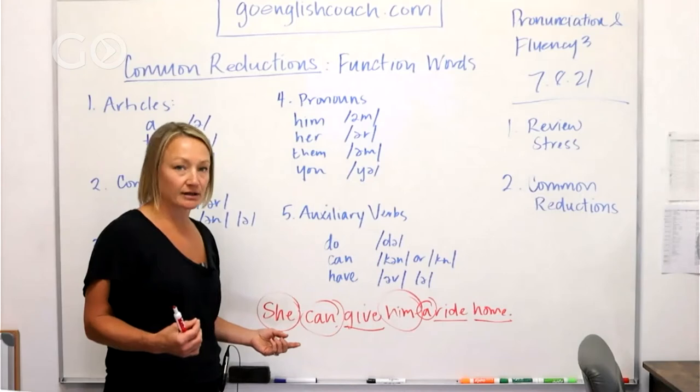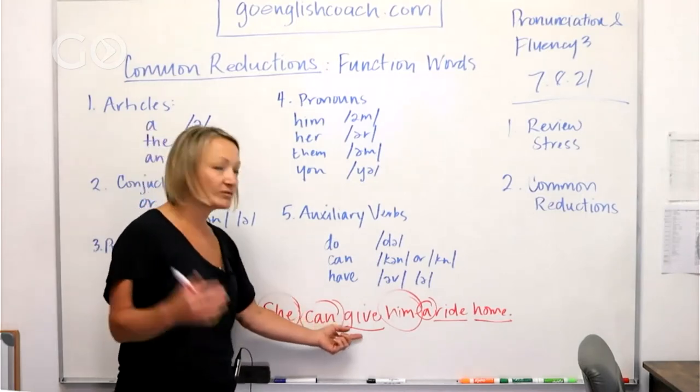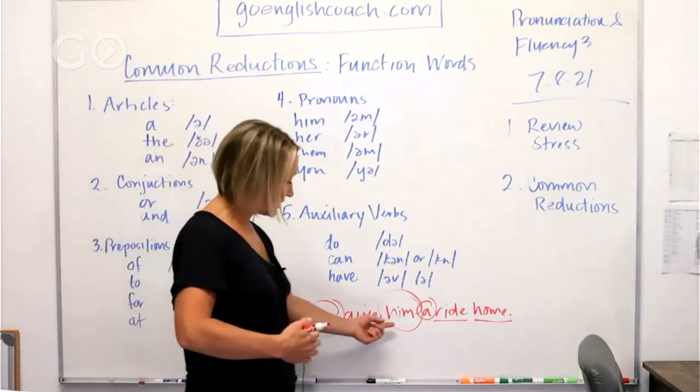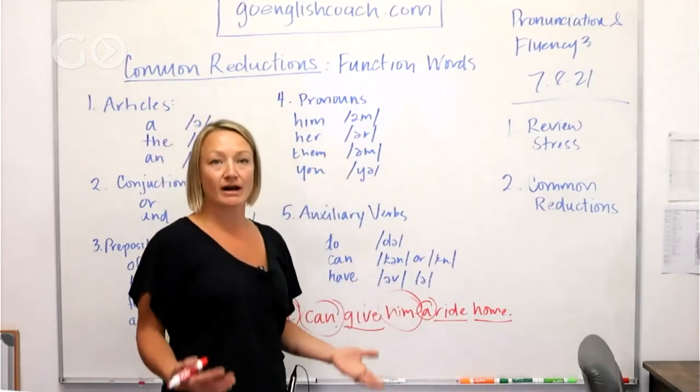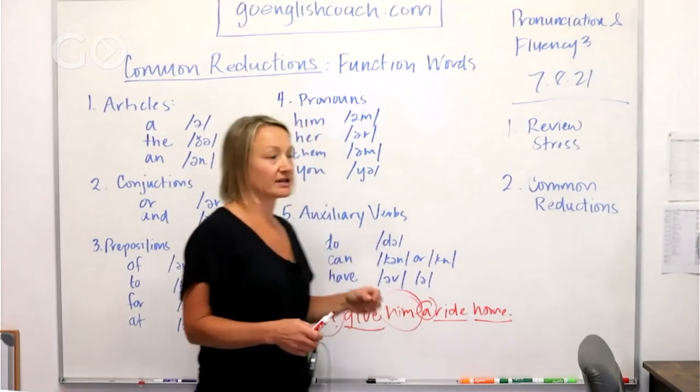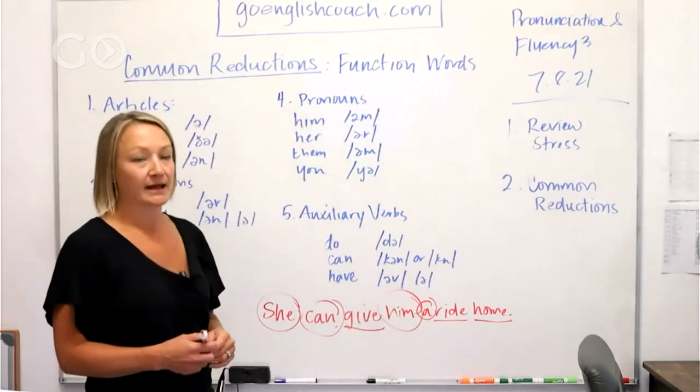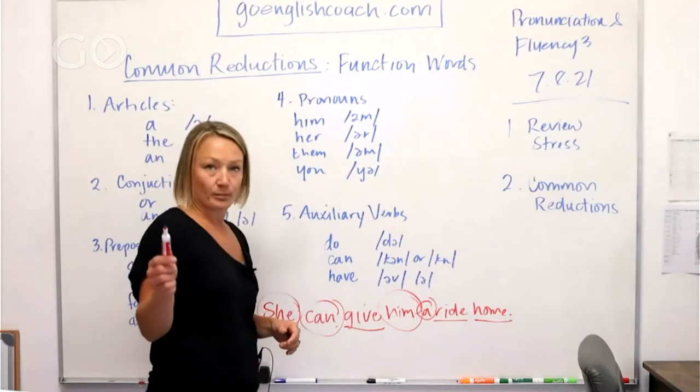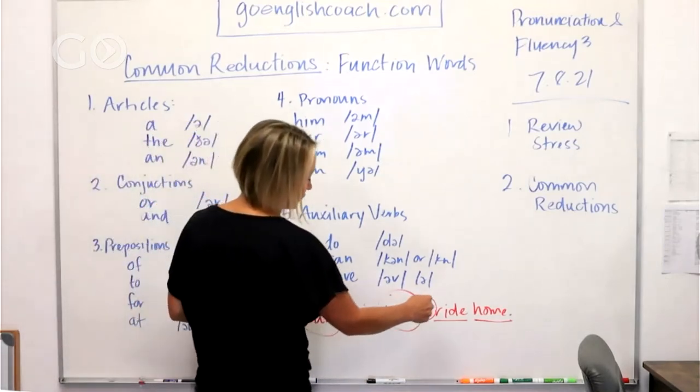So what happens with those in this particular sentence is that we reduce them. So 'she' we say very quickly, 'can' we say can, 'give' we stress so that's full, 'him' we say like this him. She can give him a ride home. We are reducing these circled words here.